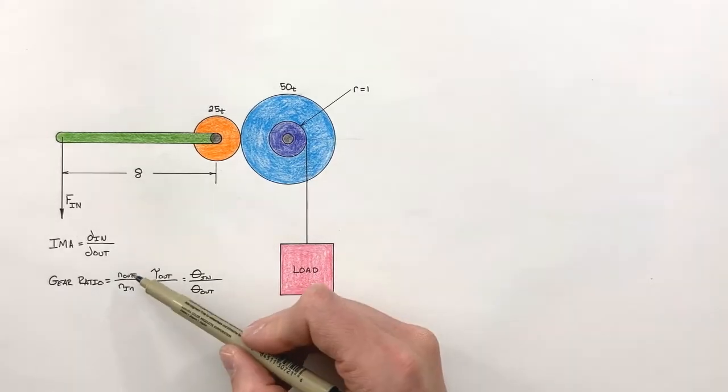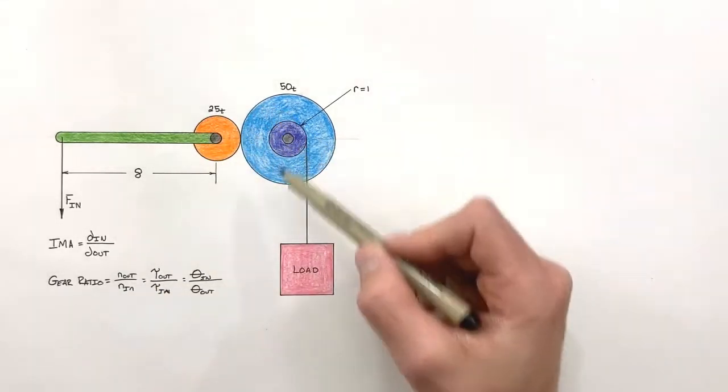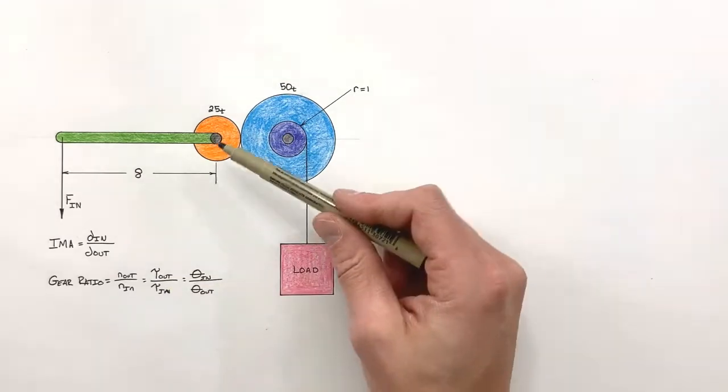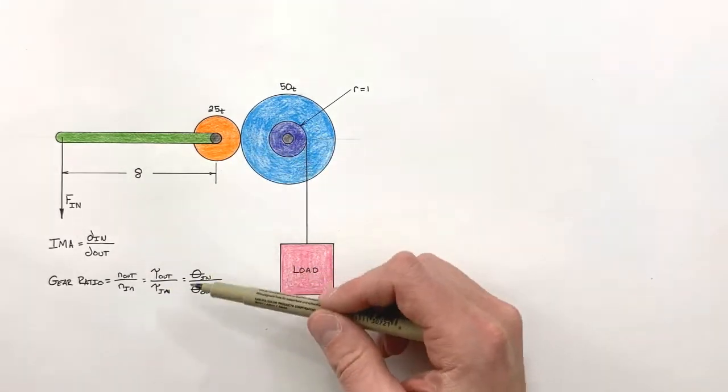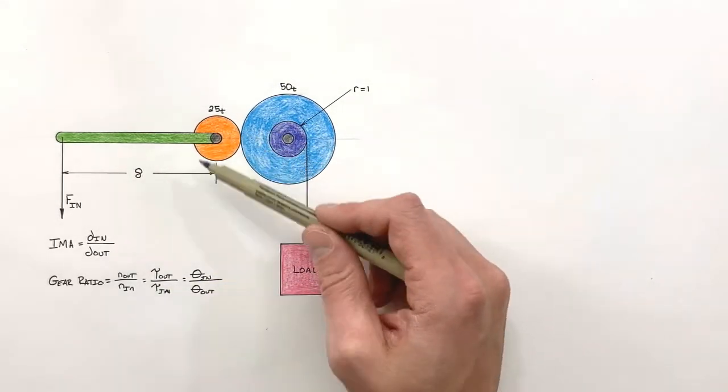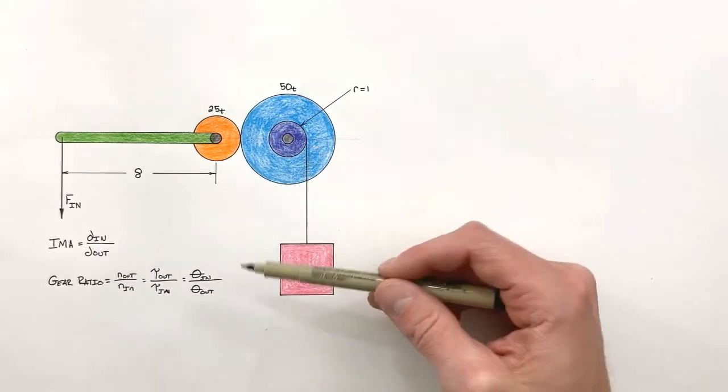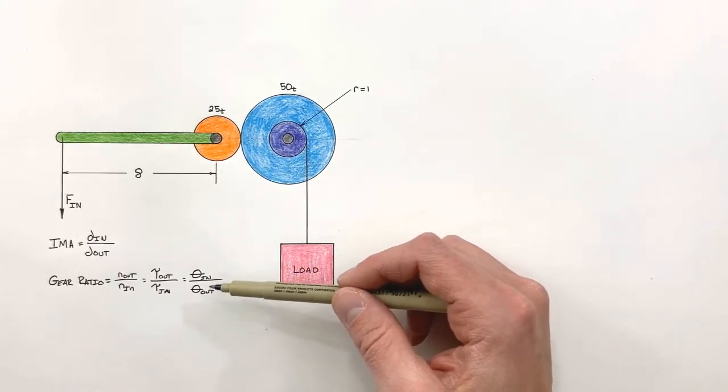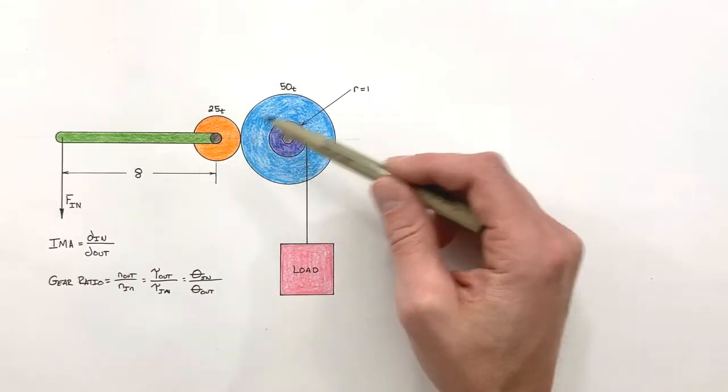We can talk about gear ratio with reference to tooth counts on gears, or we could talk about the relationship between the torques produced or talk about the angular distance traveled by one gear as opposed to the other gear. But what I want you to realize is whenever we're dealing with gear ratio, we're talking about rotational quantities.